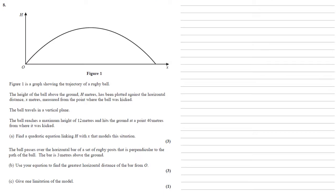Figure 1 is a graph showing the trajectory of a rugby ball. The height of the ball above the ground, h metres, has been plotted against the horizontal distance, x metres, measured from the point where the ball was kicked. The ball travels in a vertical plane, and the ball reaches a maximum height of 12 metres and hits the ground at a point 40 metres from where it was kicked.